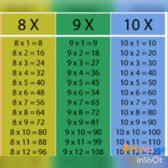Table of 9: 9 ones are 9, 9 twos are 18, 9 threes are 27, 9 fours are 36, 9 fives are 45, 9 sixes are 54, 9 sevens are 63, 9 eights are 72, 9 nines are 81, 9 tens are 90, 9 elevens are 99, 9 twelves are 108.